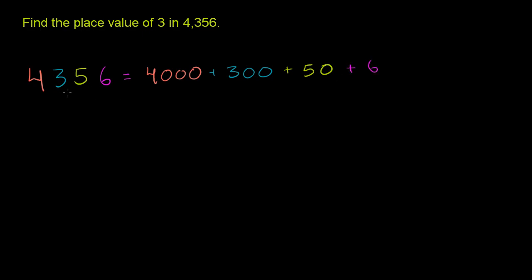You can come up with that just based on how we said it: 4,356. Now another way to think about this is 4 thousands plus 3 hundreds plus 50, or 5 tens, plus 6, or 6 ones.